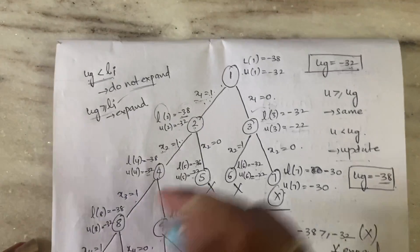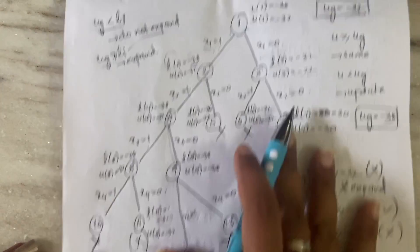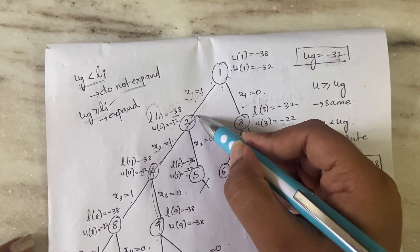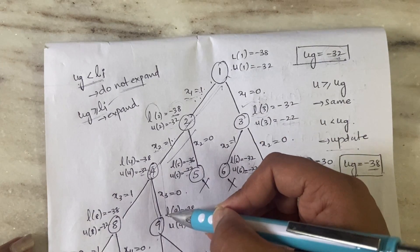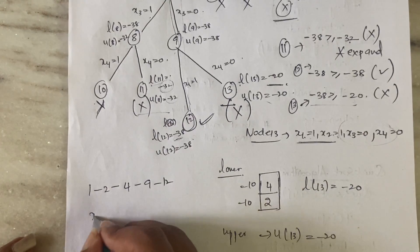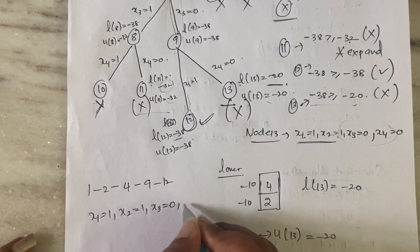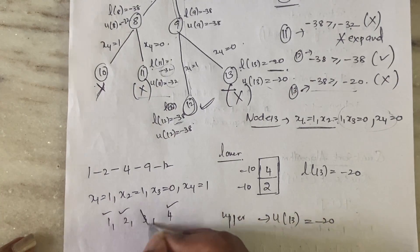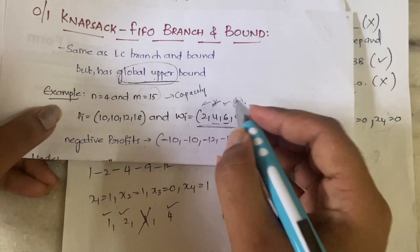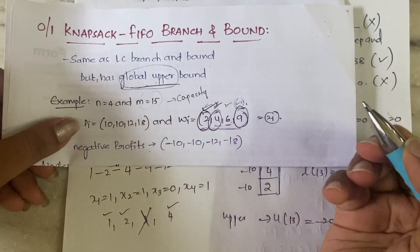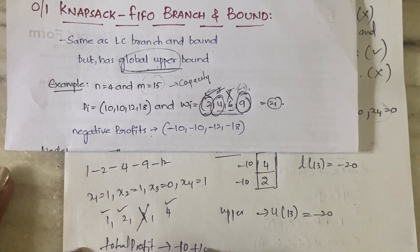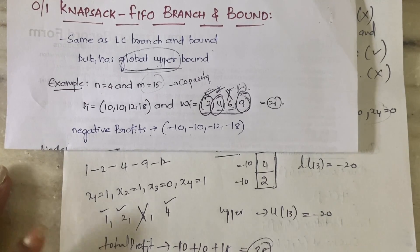The optimal path is 1 → 2 → 4 → 9 → 12. That means x1=1, x2=1, x3=0, x4=1 — you are taking items 1, 2, and 4 (weights 2, 4, and 9), and not taking item 3 (weight 6). Total profit is 10 + 10 + 18 = 38.